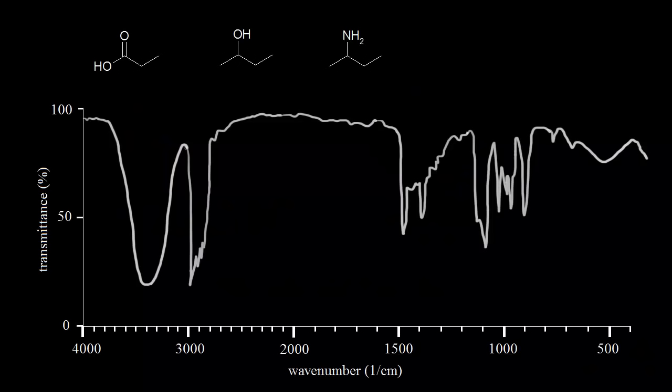Let's look at some practice IR spectra. So here we have three molecules, a carboxylic acid, an alcohol, and an amine. And below there's an IR spectrum of one of these molecules. So let's figure out which molecule has this IR spectrum.